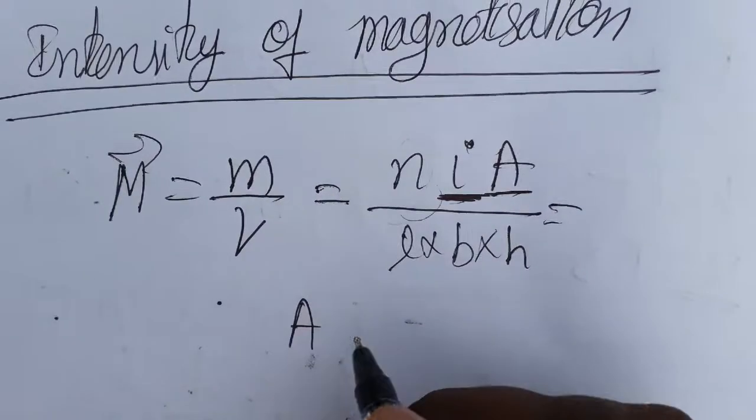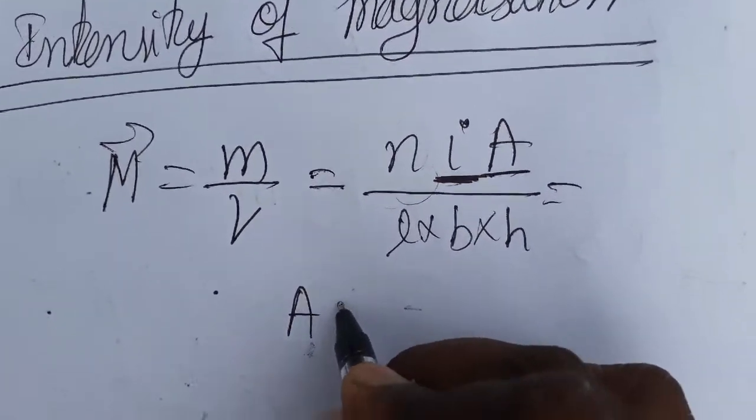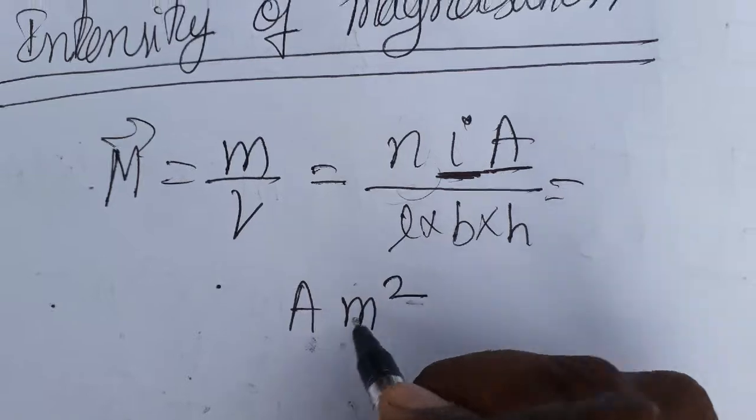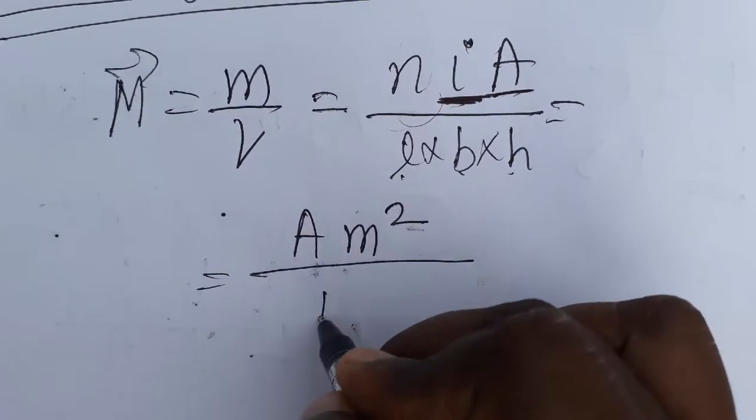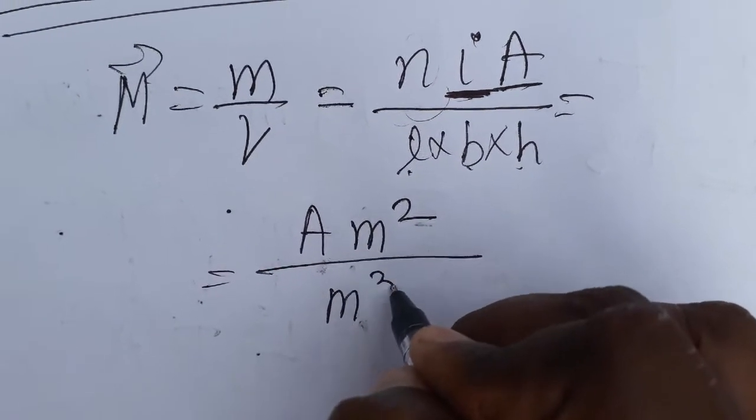Area is πr² or length into breadth, we can take it as meter square. Area is meter square. Length into breadth into height is meter meter meter, which is meter cube.